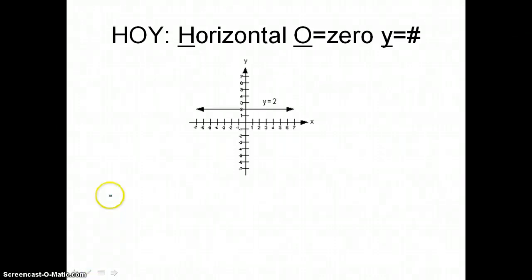Hoy, that's what hoy stands for. And here, when you see a horizontal line, just like here, you're going to get a zero slope and this equation here represents y equals 2.